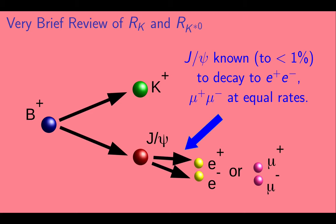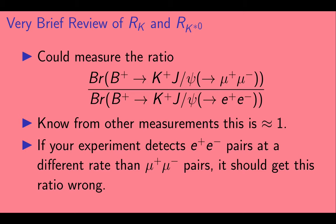Now, the J psi has been heavily studied. We know that it decays to E plus E minus and mu plus mu minus at essentially equal rates. This equality of branching fractions is known to better than 1%. In principle, we could measure the ratio of the branching fractions of a B plus going to a K plus and a lepton-anti-lepton pair through a J psi particle. We know from the observations of a J psi that this ratio must be very close to 1. But if your experiment detects E plus E minus pairs at a different rate than mu plus mu minus pairs, it should get this ratio wrong.